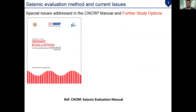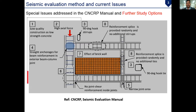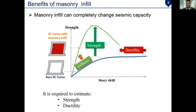Since we are now adopting the CNCP manual as a seismic evaluation standard for evaluating existing buildings in Dhaka, Bangladesh, there are still some special issues addressed in this CNCP manual that require further study. Among them, masonry infill is one of the topics to be studied in the current project. The masonry infill can completely change the seismic capacity — it improves the strength and stiffness while somewhat reducing ductility, but eventually improves the seismic index, as already explained in the previous presentation. So it is important to estimate this strength and ductility.